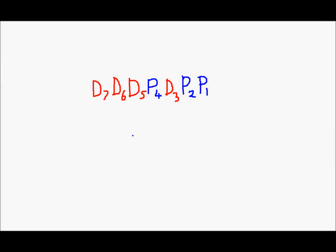I am Saud and in this video we are going to have fun with Hamming code. Hamming code is basically used to detect errors. Before we transmit data bits, we construct their Hamming codes.